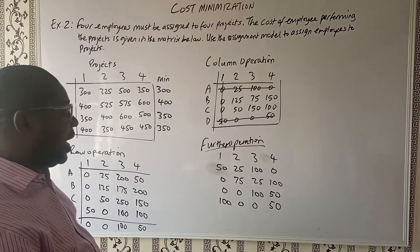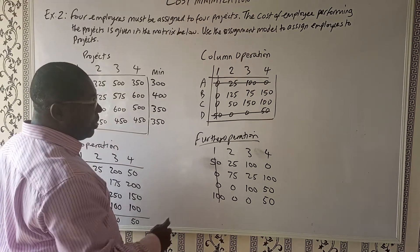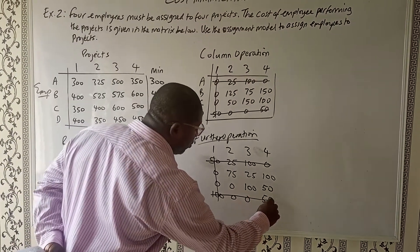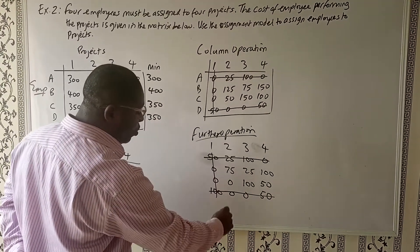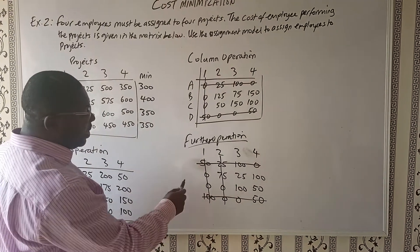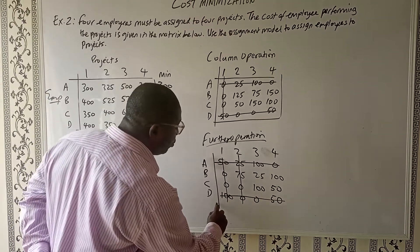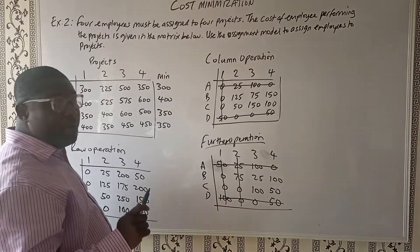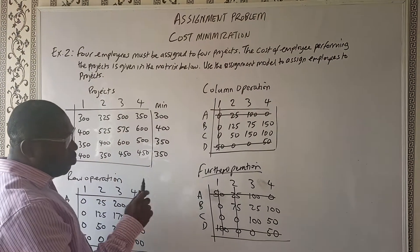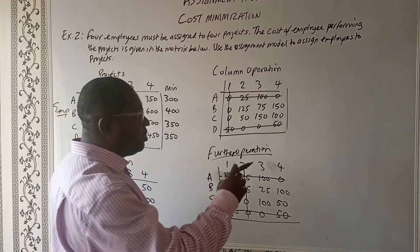Now we try to cover as many zeros as possible with lines again. One line covers a row of zeros, another goes across to cover two zeros, another covers more zeros. We now see that we have achieved four lines covering the zeros — equal to our 4×4 square matrix. So we can now check for our optimum assignment.